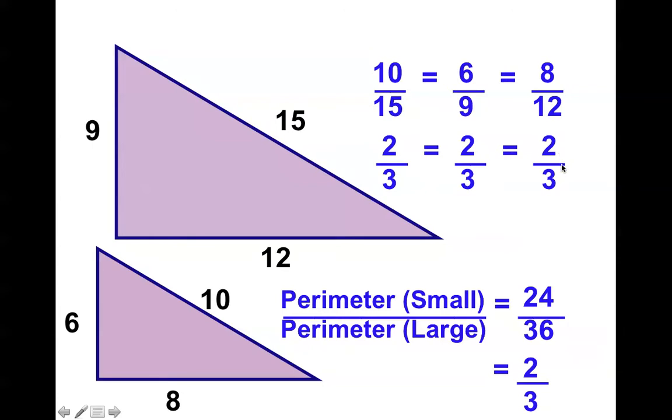If you think about that, it actually makes sense. Because all the side lengths are 2-thirds, if you added up all the side lengths, again, the ratio would stay 2-thirds. Kind of a neat pattern, huh? Alright.